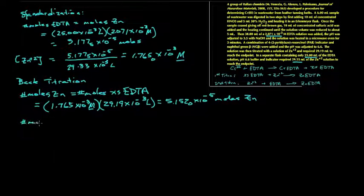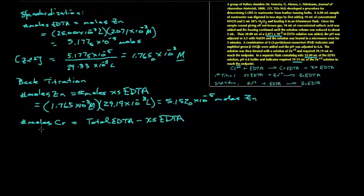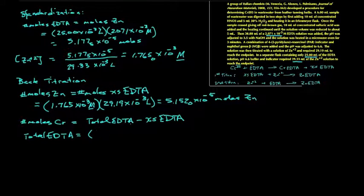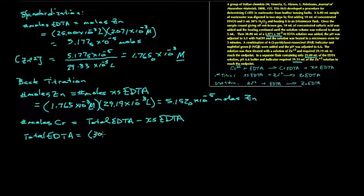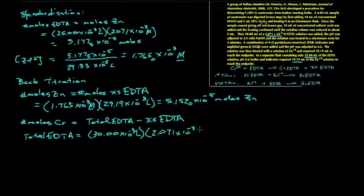The number of moles of chromium is equal to the difference between the total EDTA that was pipetted into that solution minus the excess EDTA that we found in the back titration. So we need to calculate the total EDTA. And we look to see what the volume of EDTA was for that particular titration. That was 30 milliliters times the concentration, 2.071 times 10 to the minus three molar. It gives us a total of 6.213, the next digit is zero, times 10 to the minus five moles total.